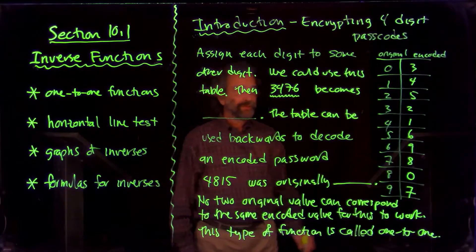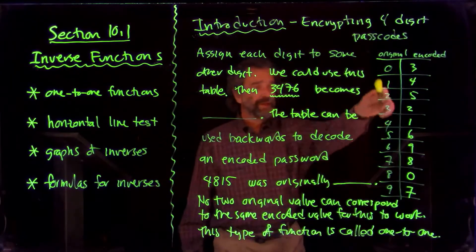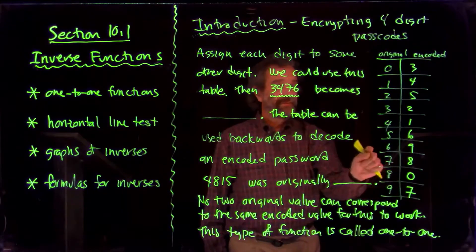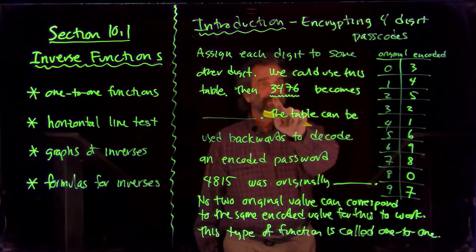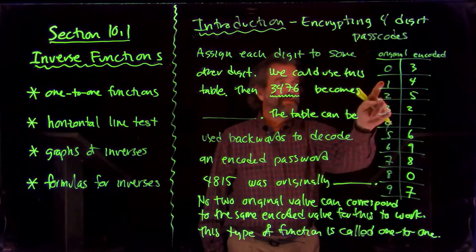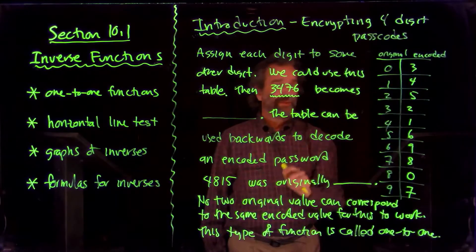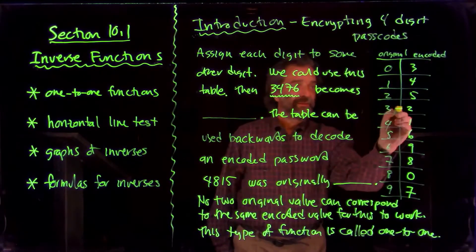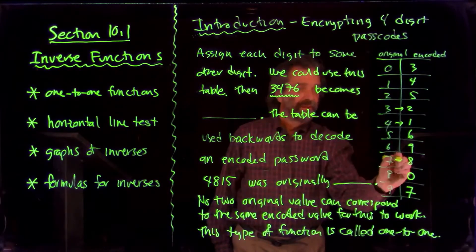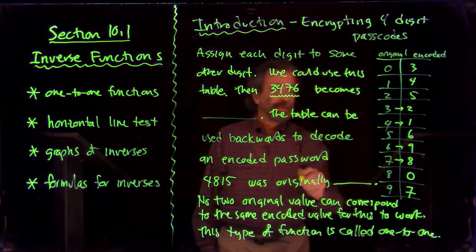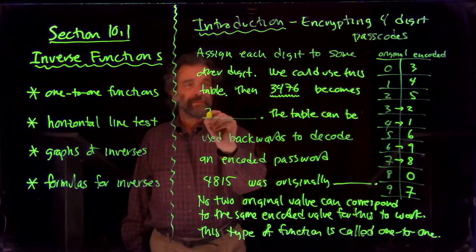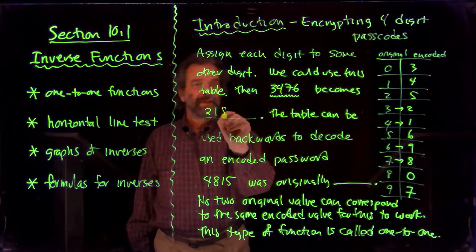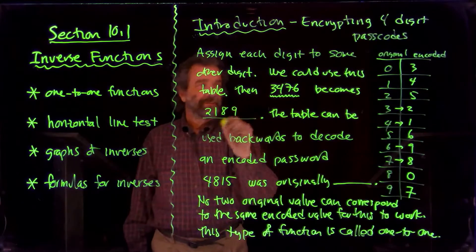One way to do it is by having a table like this, which you have already sent to your friend, that says I've taken my code and taken the original numbers and turned them into these encoded numbers. So: three became a two, four became a one, seven became an eight, and a six became a nine.